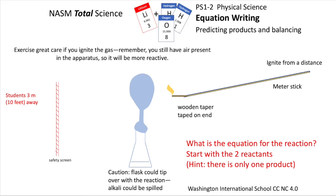Because one of the products is hydrogen, you can ignite the gas, but with great care because you've got air in the apparatus so it'll be a much more vigorous reaction. Ignite it from the end of a meter stick with students three meters away from the safety screen. What's the equation for this reaction? Start with two reactants, one's obviously hydrogen, and what part of the air is it going to react with? There's only one product.